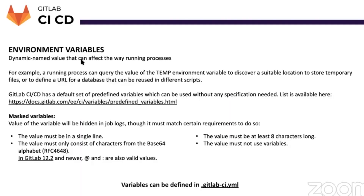Coming back to the environment variables. Variables are dynamically named values that can be used to make your CI/CD pipelines completely parameterized. In general, it's always best practice to remove your hard-coded values and use environment variables to make the jobs portable and provider agnostic.